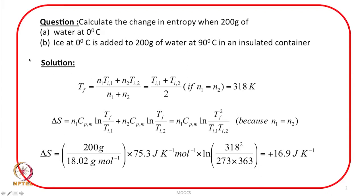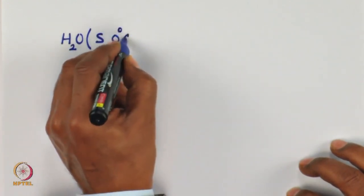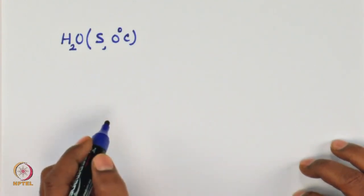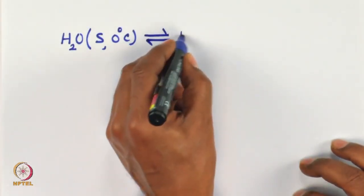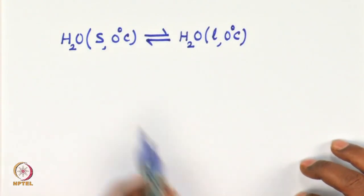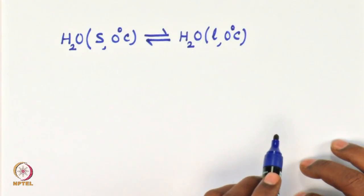Now we take a look at the second part: adding 200 gram of ice to 200 gram of water. We are taking 200 gram of ice in solid form at 0 degree Celsius and adding it to 200 gram of water at 90 degree Celsius. Since we are adding ice, a phase equilibrium will be set up — the solid form must melt to liquid, and some heat will be required for this phase transition.